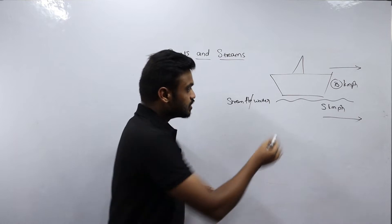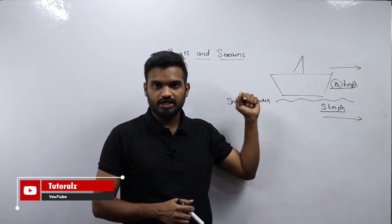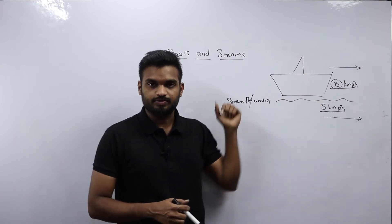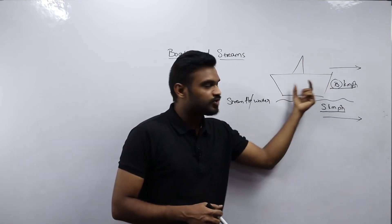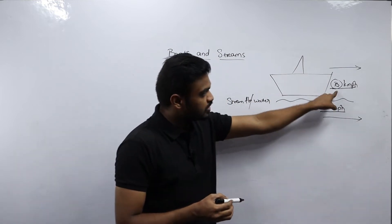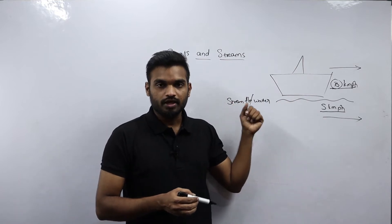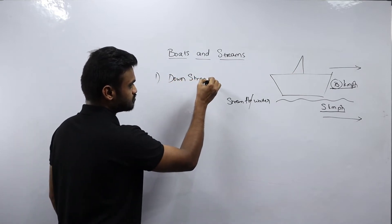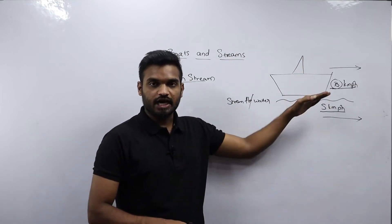When both the boat and water are travelling in the same direction, we can call it downstream. In downstream, the speed of the boat will become the speed of boat plus the speed of water — that is B km/h plus S km/h — because water is pushing the boat in the same direction and increasing its speed.